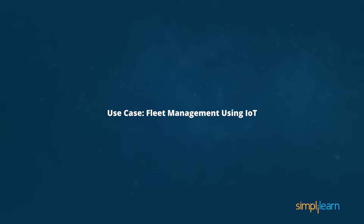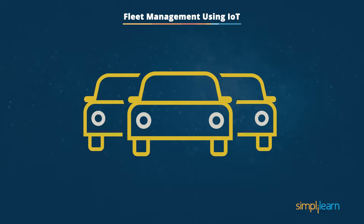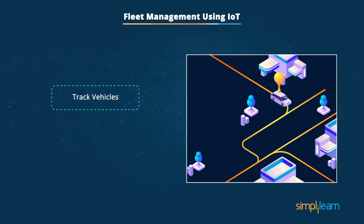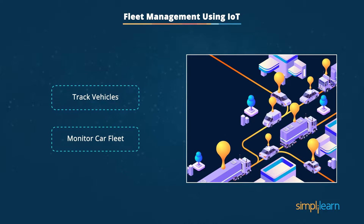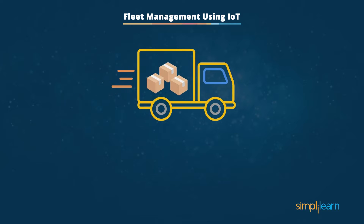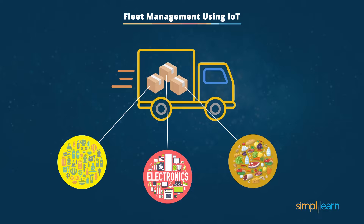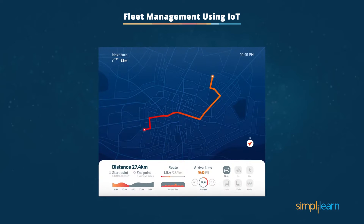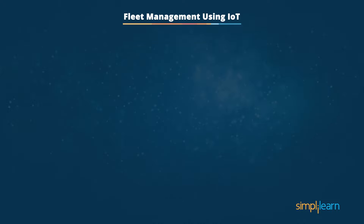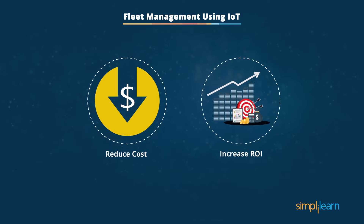Fleet management is a classic example of IoT in application. IoT is mainly used to track vehicles from one point to another. The entire fleet can be monitored with RFID chips embedded within every car. The same RFID can also be used to track products such as consumer goods, electronics, and food items. You can get real-time information on routes that the fleet takes. OBD devices can track vehicle behavior and performance, including fuel consumption and mileage, reducing total cost and providing greater return on investment.